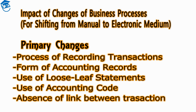The third primary change is the use of loose leaf statements. There was a time when bound handwritten records were used in manual accounting processes. These are now being replaced by loose leaf machine-written records. In a computerized information system, magnetic tapes, floppy disks, disk kits, and printouts completely replace traditional records, requiring proper controls to prevent unauthorized destruction and substitution.